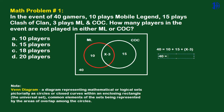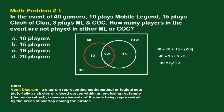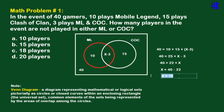Now we simplify: 40 equals 10 plus 15, which is 25, plus x minus 3. Then 40 equals 25 minus 3, which is 22, plus x. Transferring 22 to the left side, x equals 40 minus 22, so x equals 18. Therefore, the answer is Letter C: 18 players.